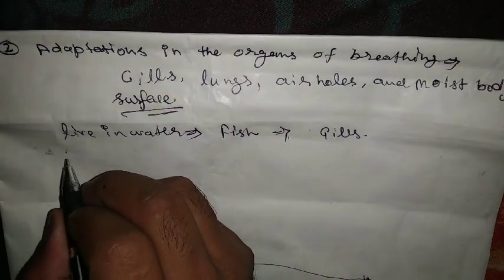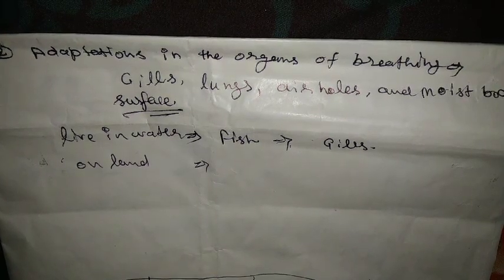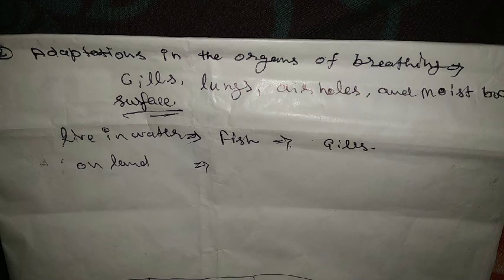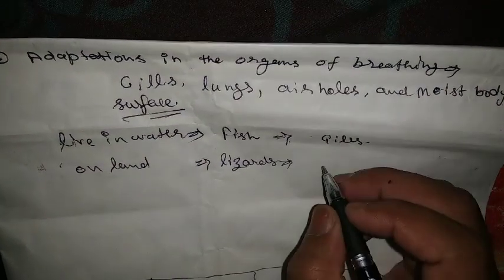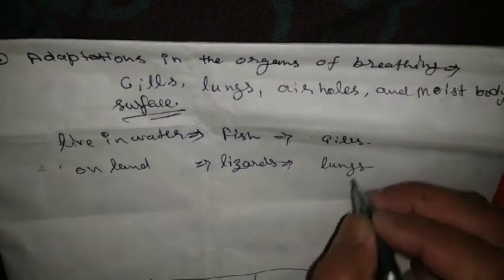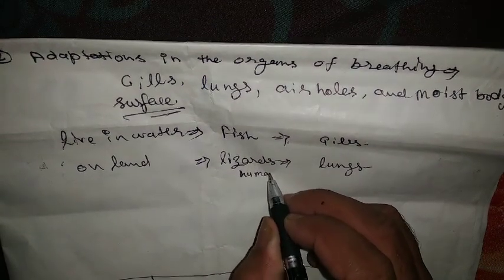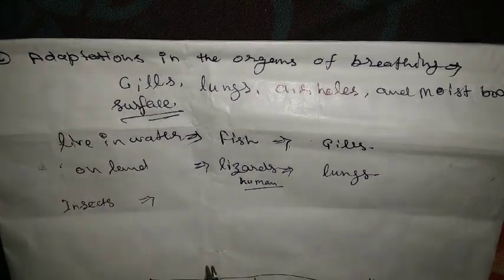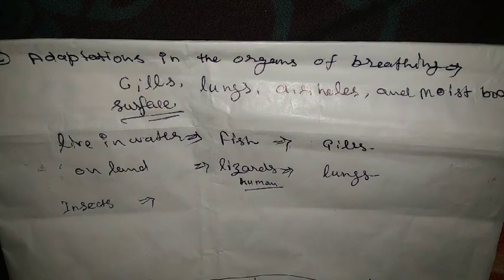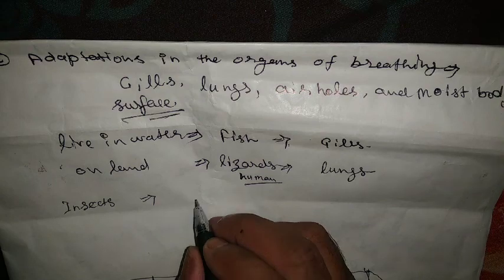Animals living on land breathe with the help of lungs, such as lizards. Insects breathe with the help of air holes called spiracles.